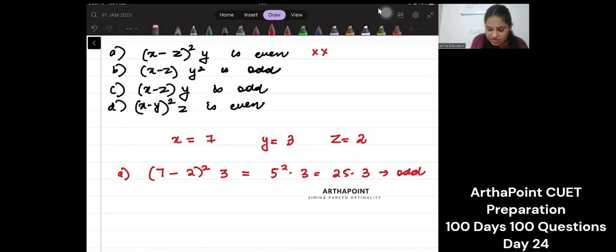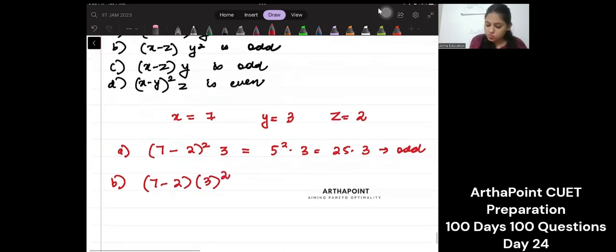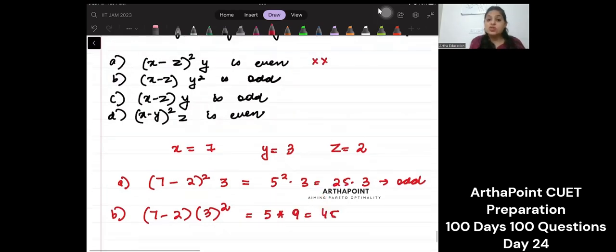Let's have a look at the second one: (x-z) times y². So this is going to be 5 into 9, which is 45, which is odd. This is correct.